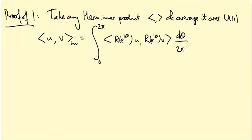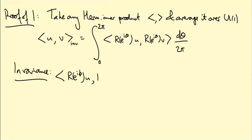I'm not going to prove that this formula gives a Hermitian inner product — that's easy, you can check it by verifying the axioms. The interesting part is proving it's invariant. What I need to prove is that ⟨R(e^{iφ})u, R(e^{iφ})v⟩_inv equals ⟨u, v⟩_inv.